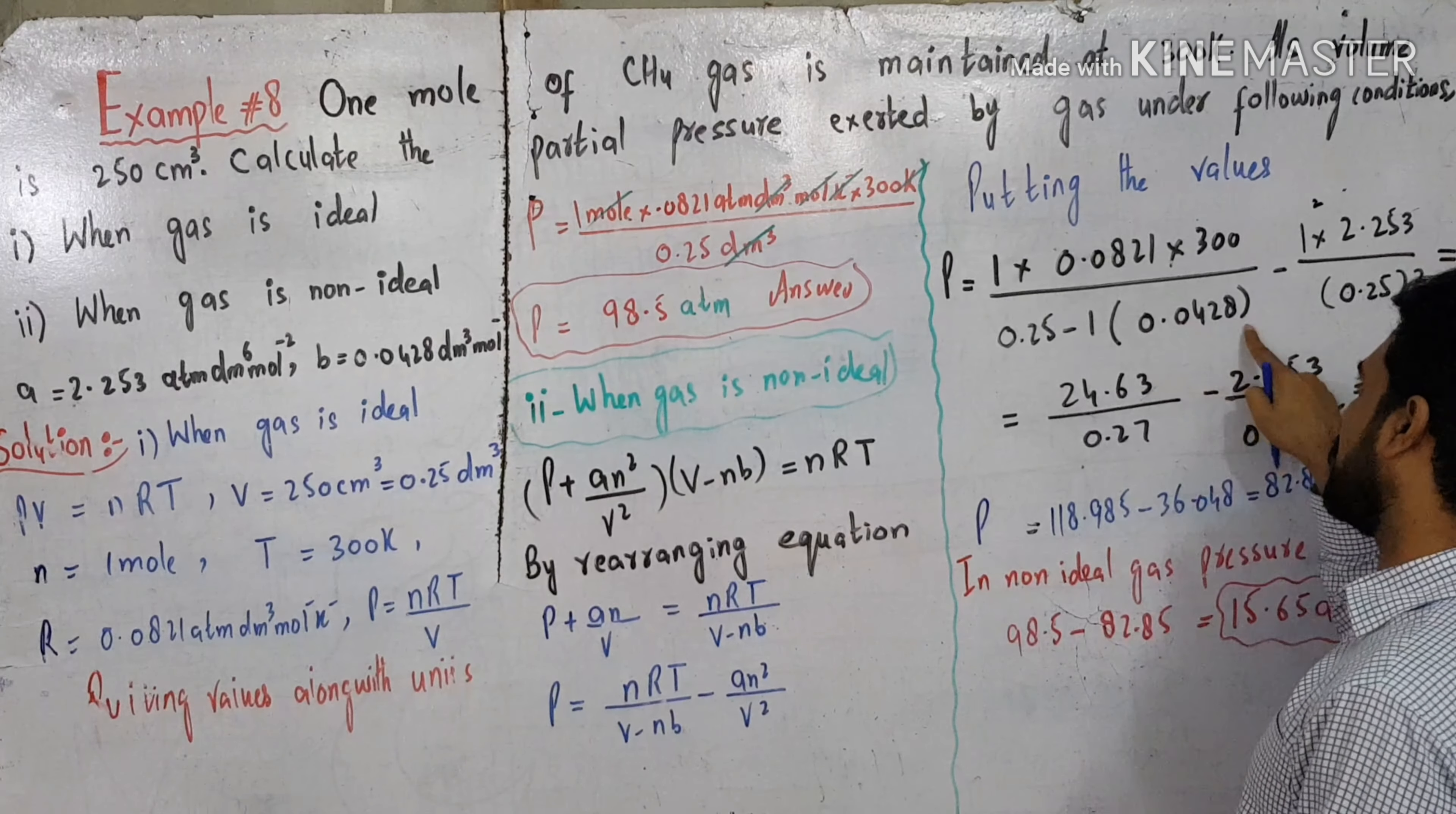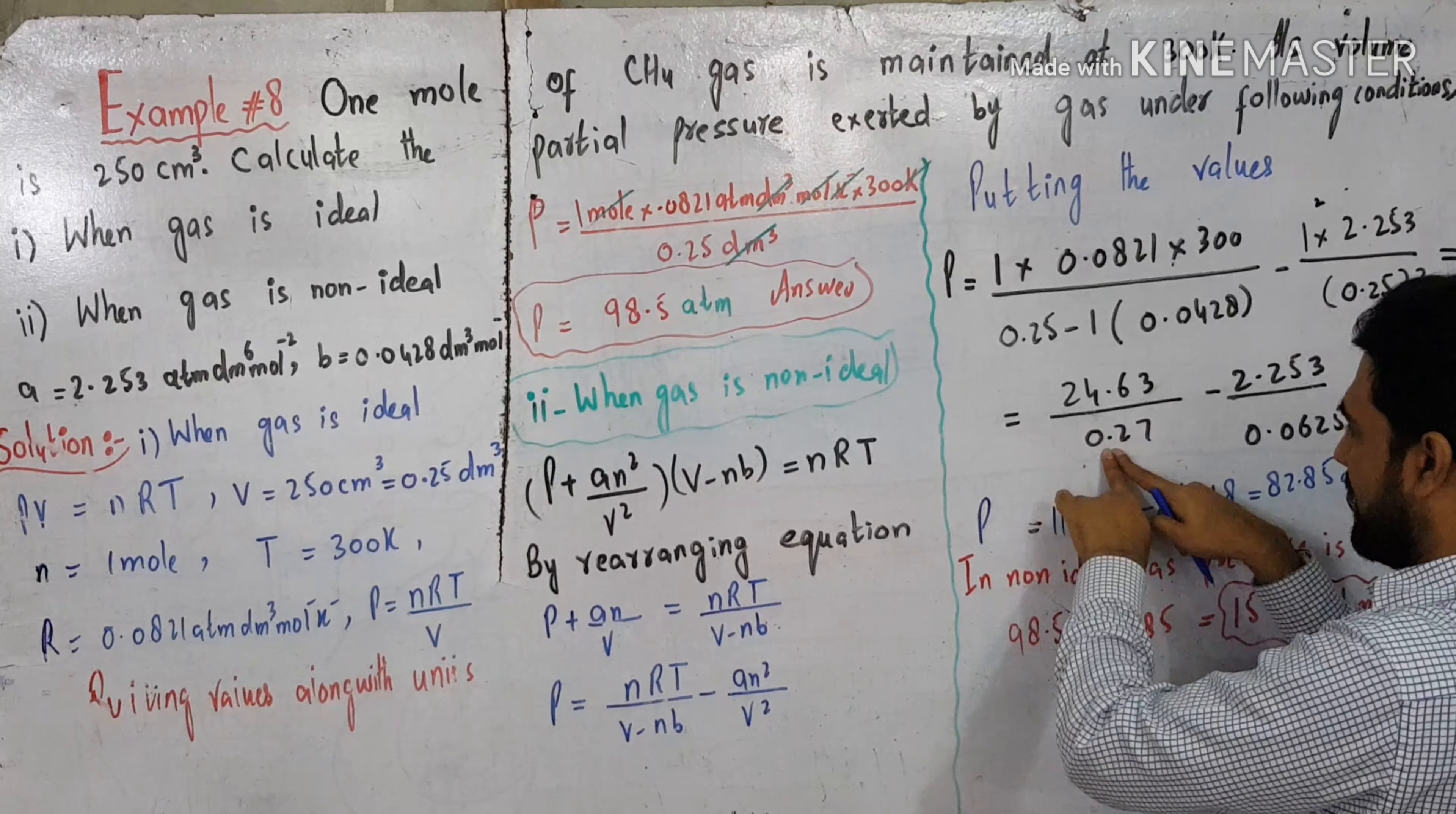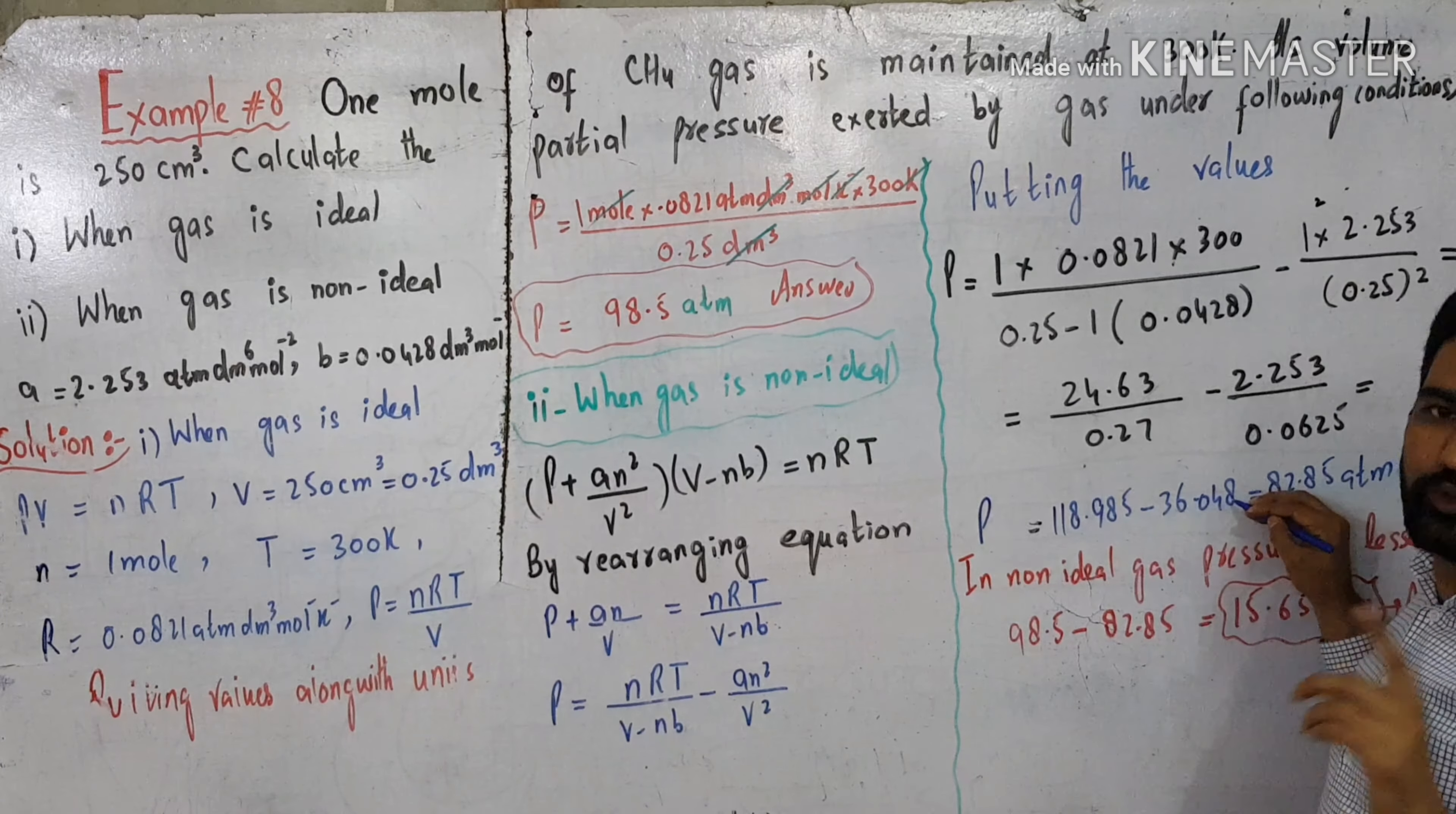B is 0.0428. N squared is 1. A is given as 2.253, divided by V squared. V is 0.25 squared, which is 0.0625. Calculating: 2.253 divided by 0.0625. This gives 118.985 minus 36.048.